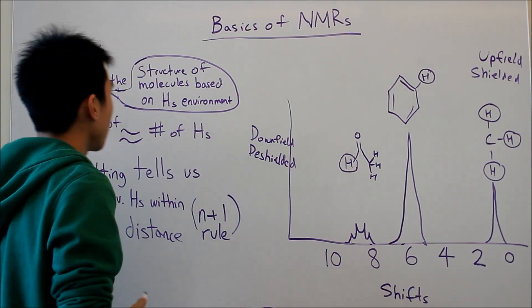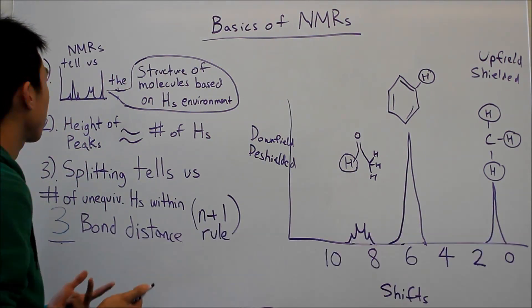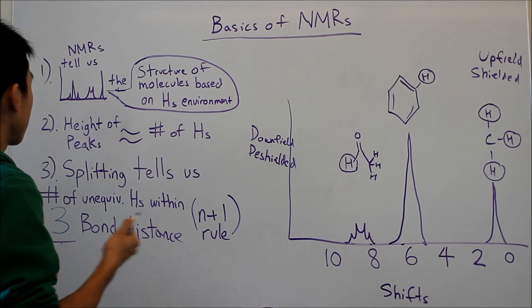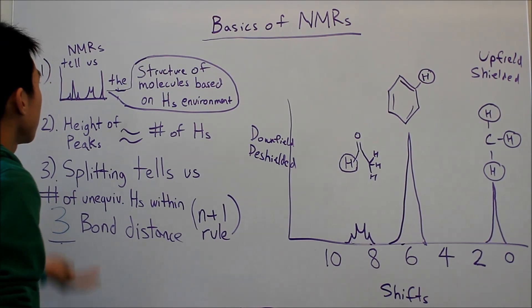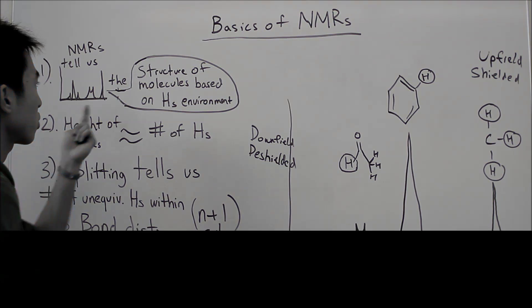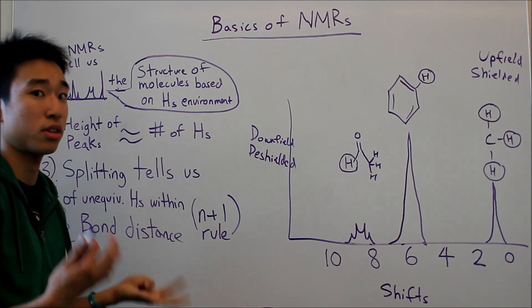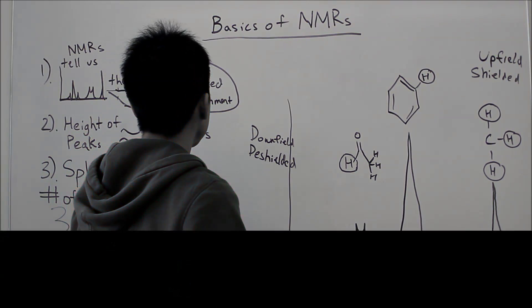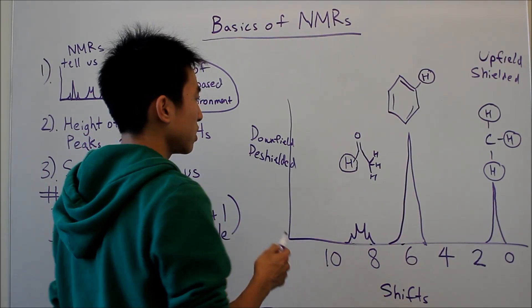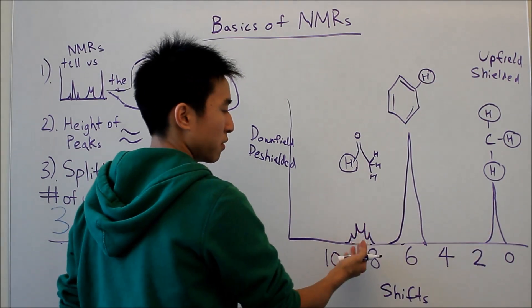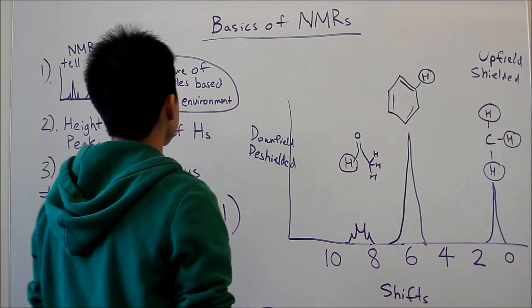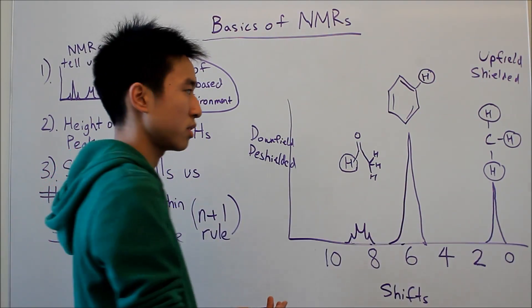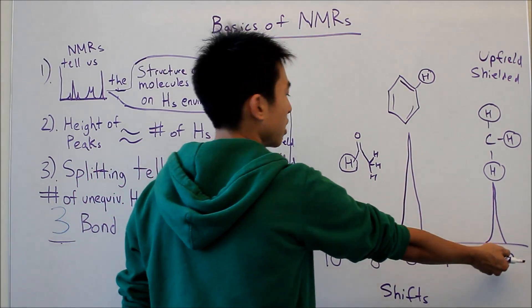Let's go on from there. The next thing I wanted to talk about was what the NMR basically tells us. So the NMR can tell us basically the structure of the molecules based on their hydrogen environments because, like I said before, if the environment is more deshielded, chances are the shift is going to be picked up here, and if the environment is more shielded, the chances are the shift will be here.